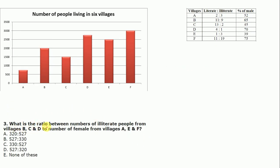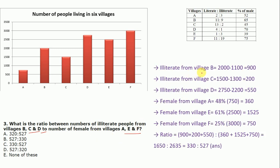Question 3: What is the ratio between the number of illiterate pupils from villages B, C and D to the number of females from villages A, E and F? We find illiterate pupils from each of those 3 villages and females from the other 3, then calculate the ratio. Illiterate from village B = 2000 − 1100 = 900. We subtract the literate count from the total pupils using values already calculated for the 6 villages.